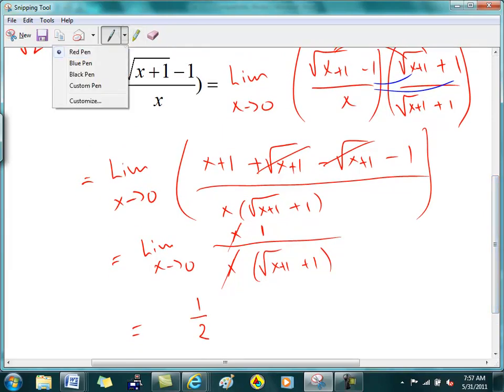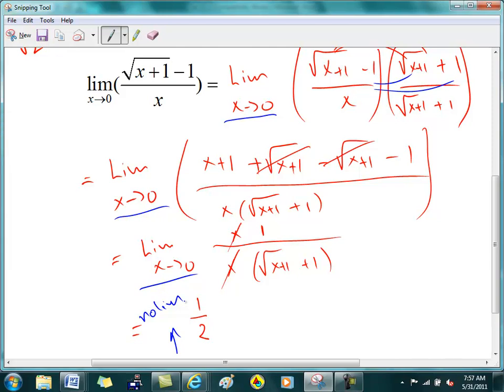Notice that I always have lim there. Until the very end, there's no lim here, because I plugged in a zero, and therefore I got a number out of it. I already took the limit. So if you don't have these lims here, you're going to be docked points.